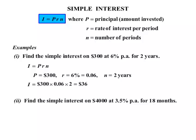Our second example: we're asked to find the simple interest on $4,000 at 3.5% per annum for 18 months. It's a little bit different because this one's months. So firstly, the formula again, I equals PRN.